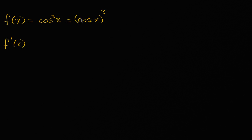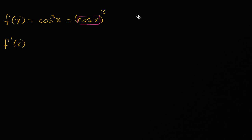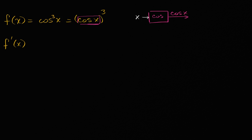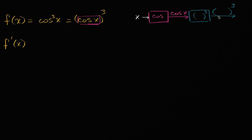If we have a function defined as essentially a composite function, notice this expression: we are taking something to the third power. It isn't just an x we're taking to the third power — we are taking cosine of x to the third power. So we're taking the function cosine of x and inputting it into another function that takes it to the third power. We put x into one function — cosine of x — which produces cosine of x, and then input that into a function that takes things to the third power, giving us cosine of x to the third power. This is a composite function.